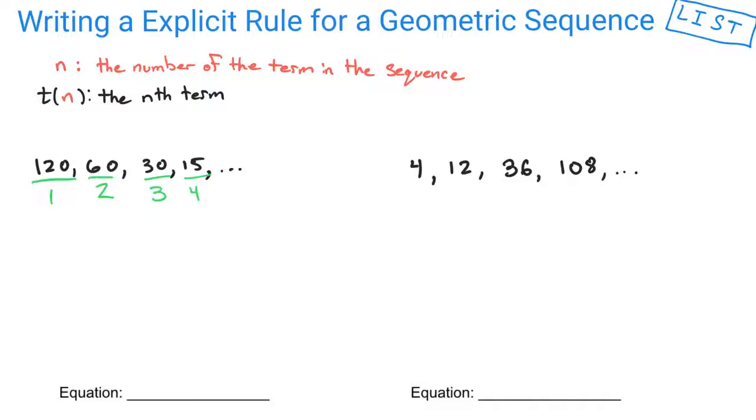So when we talk about the nth term, 120 is the first term, 15 is the fourth term, and that's when n equals 1 and 4 respectively. So n is the number of the term in the sequence.